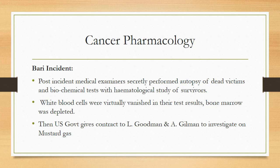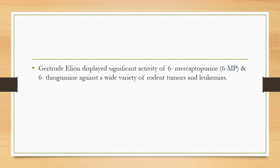In cancer pharmacology, the Bari incident led post-incident medical examiners to perform autopsies of dead victims and biochemical and hematological studies of survivors. They observed that white blood cells had virtually vanished and bone marrow was depleted. The US government contracted L. Goodman and A. Gilman to investigate mustard gas. Subsequently, significant activity of 6-mercaptopurine and 6-thioguanine was demonstrated against a wide variety of rodent tumors and leukemias.